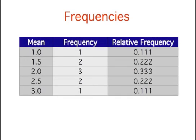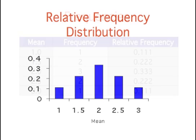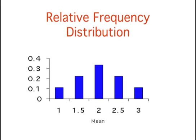The frequencies and relative frequencies of each possible mean are reported in this table. Because there are nine possible outcomes, the relative frequencies are equal to the frequencies divided by 9. This graph illustrates the distribution of the relative frequencies. Since the y-axis is the probability of obtaining a given mean from a sample of two balls, the distribution can also be considered a probability distribution.